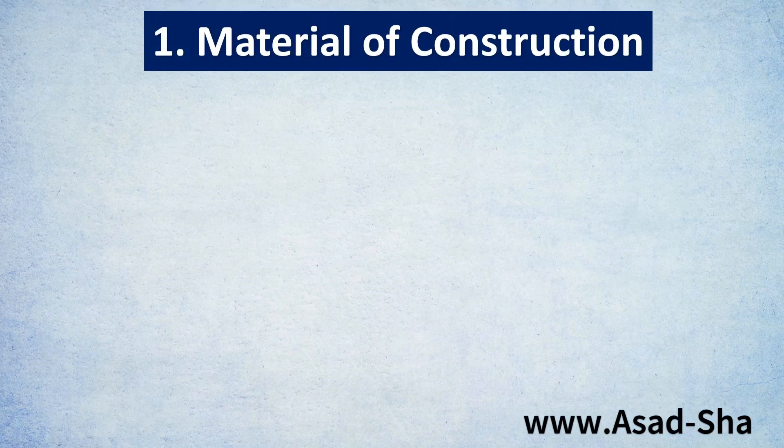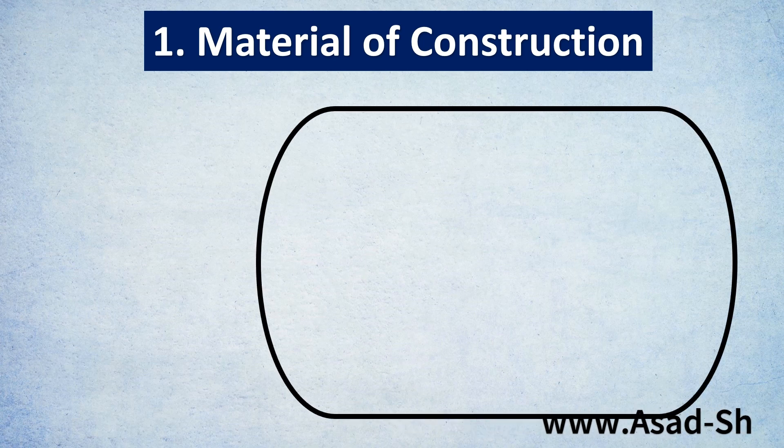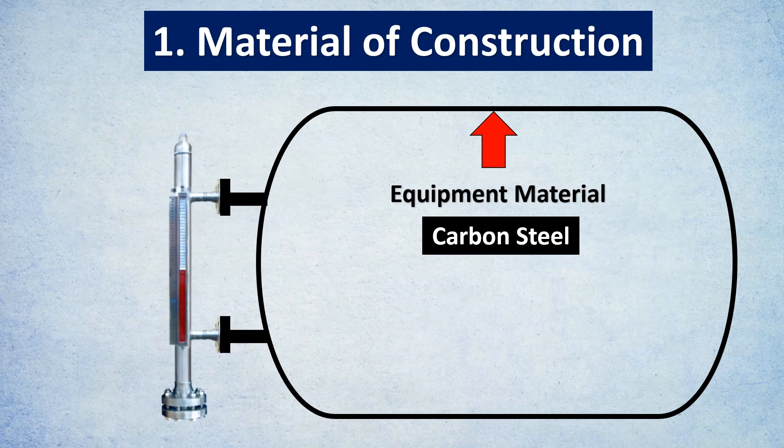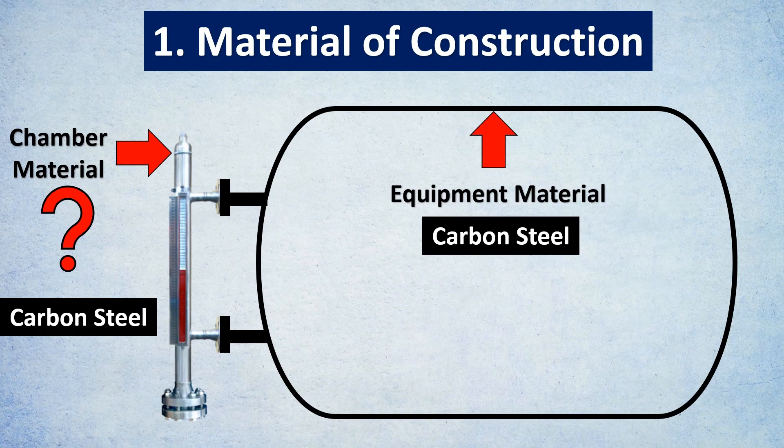For engineering any magnetic level gauges, the first consideration is the material of construction. For example, imagine here's an equipment material available which is carbon steel. Now tell me, if a magnetic level gauge is attached to it, can the chamber material be carbon steel?